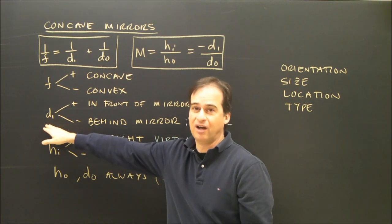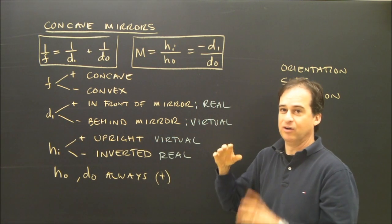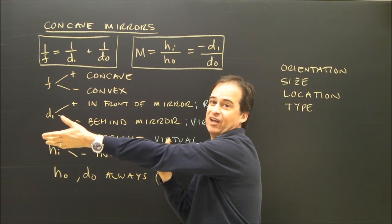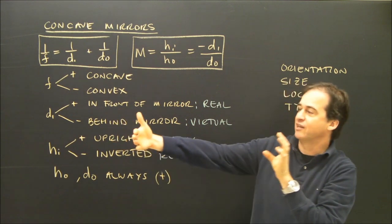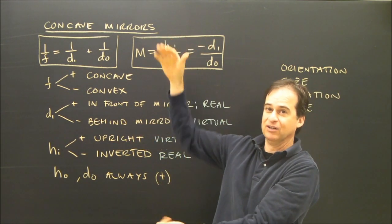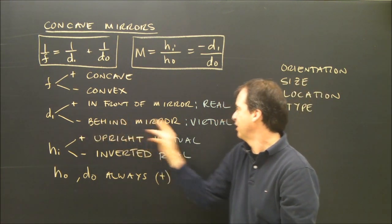If we get a negative for DI, we calculate it, we get a negative, then it means it's behind the mirror. It means here's the mirror, here's the object, the image is on the other side. I see it by looking at the mirror. I look at the mirror and I see my object reflected in the mirror and it may be bigger. So this tells me that the object is behind if it's negative and it's virtual.